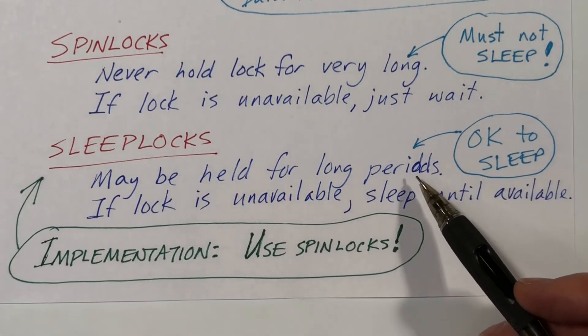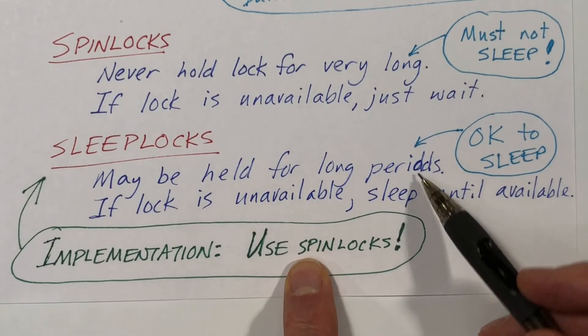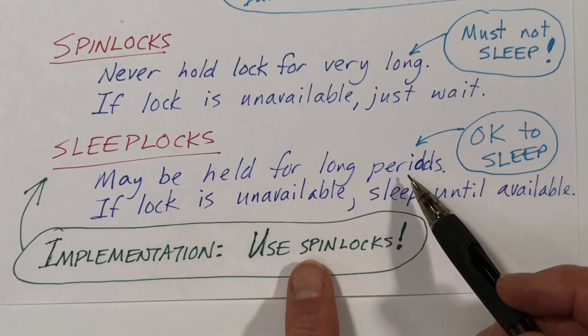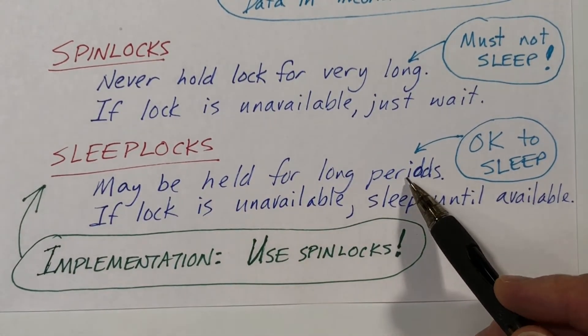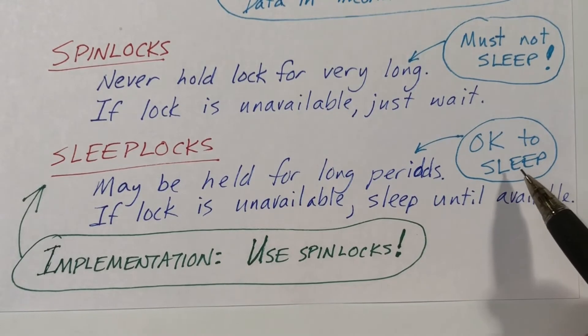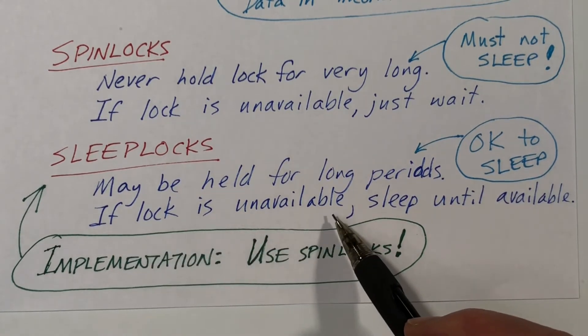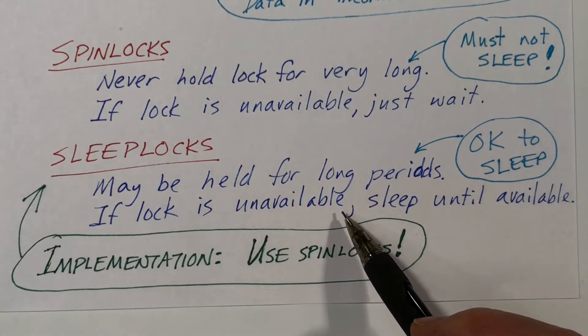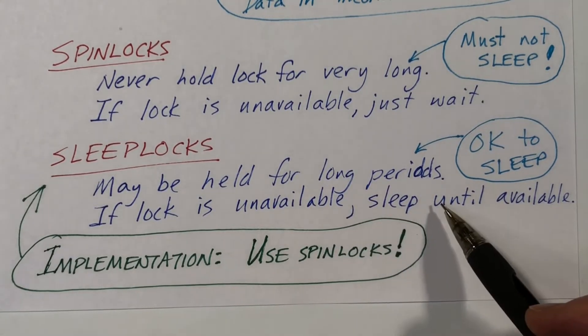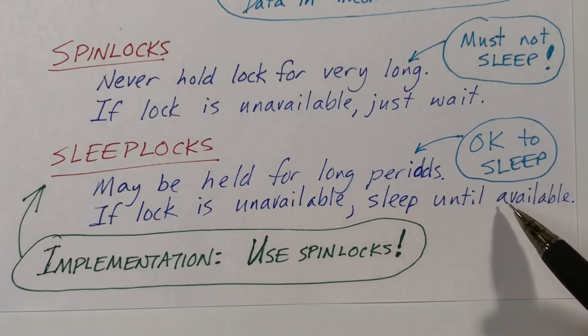So that's what sleep locks are for. We are allowed to hold a sleep lock for a long period of time. And in particular, we can sleep while we are holding the lock. And the consequence of that is in the acquire sleep function, if the lock is unavailable, that function will have to wait a long time. And in particular, it will sleep until the lock becomes available.